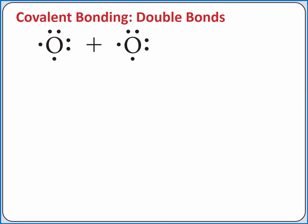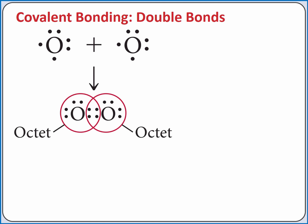We can also predict how two oxygen atoms will bond using Lewis structures. As we said previously, oxygen wants two additional electrons to satisfy the octet rule. So two oxygen atoms can share two pairs of electrons,